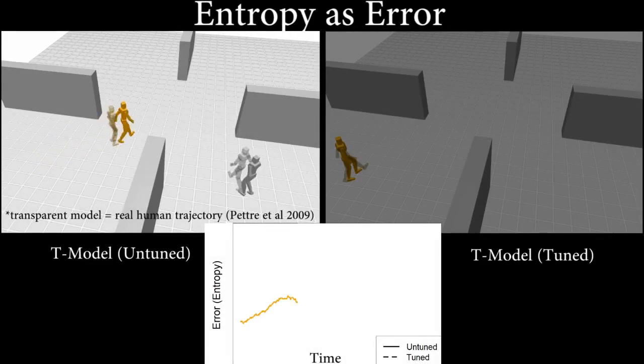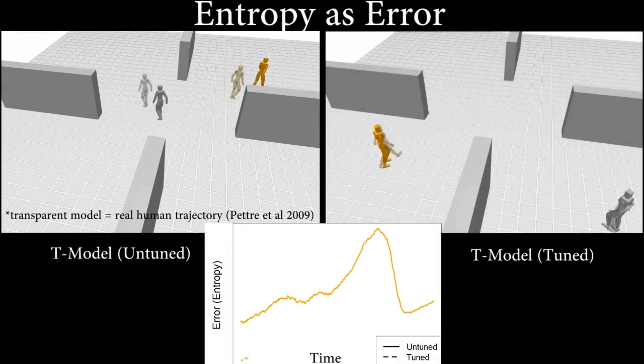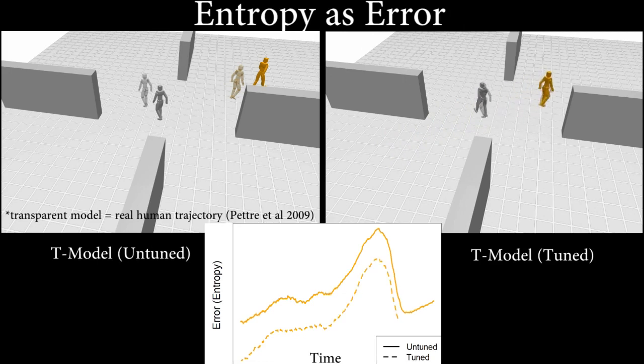Because this metric evaluates the error on a local basis, we can use it to understand how a simulation's accuracy changes over time. Here we compare a T-model simulation to real-world data. After tuning the simulation based on the data, the entropy scores decrease, as can be seen for the highlighted agent.